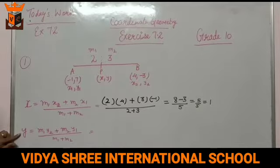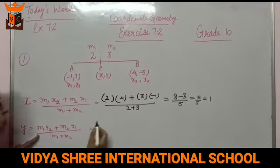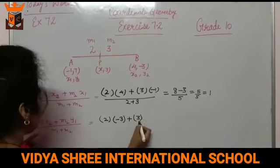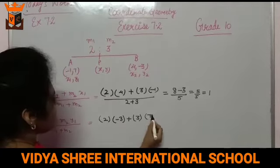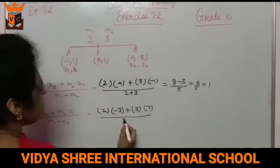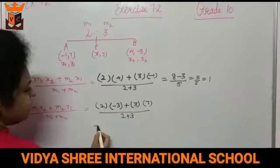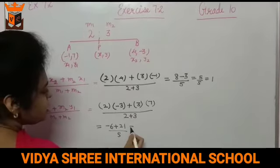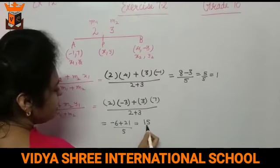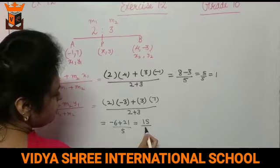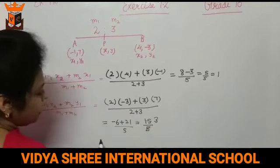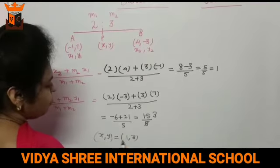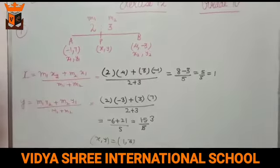Isi tarah se aapko y point nikalna hai. M1 ki value hai 2, y2 ki value hai minus 3. M2 aapke paas hai 3 aur y1 aapke paas hai 7. Aur niche hai M1 plus M2, that is 2 plus 3. So minus 6 plus 21 upon 5 — this is 15 upon 5. So 5 se ye cut ho gaya, kitna aaya? 3. Toh jo point hai aapke paas aaya (1, 3). And this is the answer.